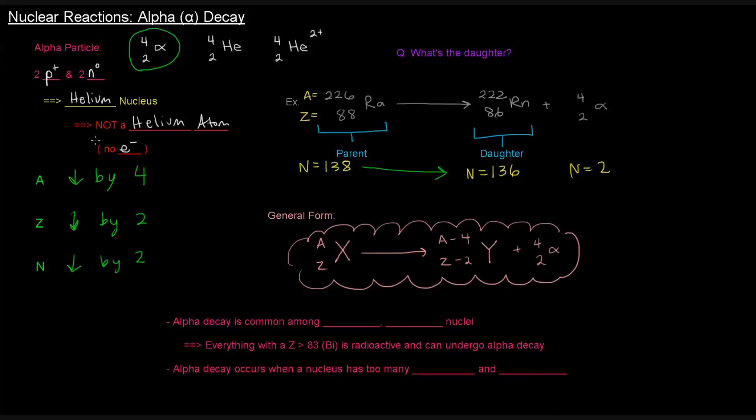There might be the question of when does alpha decay actually occur. Alpha decay is common among heavy unstable nuclei. Basically, everything with an atomic number greater than 83, which is everything beyond bismuth, is radioactive and can undergo alpha decay. They're heavy and unstable. Basically, that means they have a bunch of whatever is contributing to the mass of that nucleus.